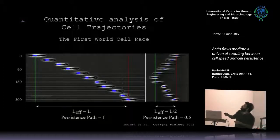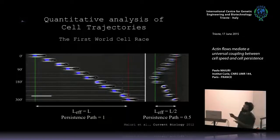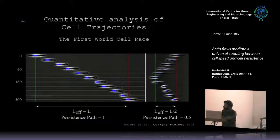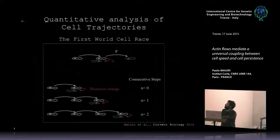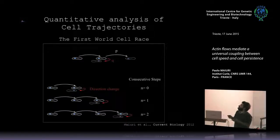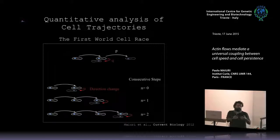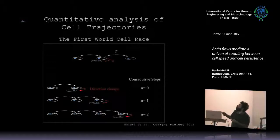Here you can see it's a cell that moves always in the same direction, and here it's a cell that is just changing its direction. These are the two parameters that I analyze. This is the definition of how I define persistence. At each single step a cell has to decide whether to keep the direction or change it. You can give a kind of probability to keep the direction that we call P, and the probability to change direction that is called Q.